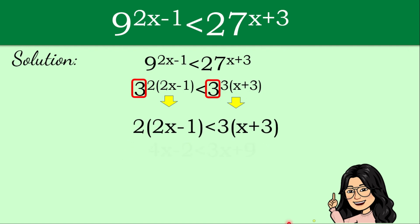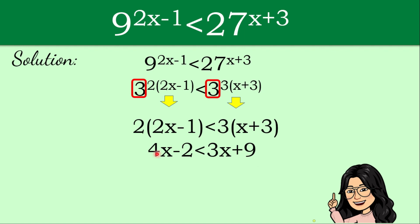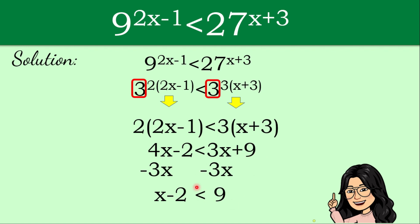From there, we distribute. So 2 times 2x gives us 4x, and 2 times negative 1 gives us negative 2. We copy the inequality symbol less than. Then 3 times x gives us 3x, and 3 times 3 gives us 9. Our next target is to have the variable on the left side and constants on the right side. We subtract 3x from both sides, leaving us with x minus 2 less than 9.